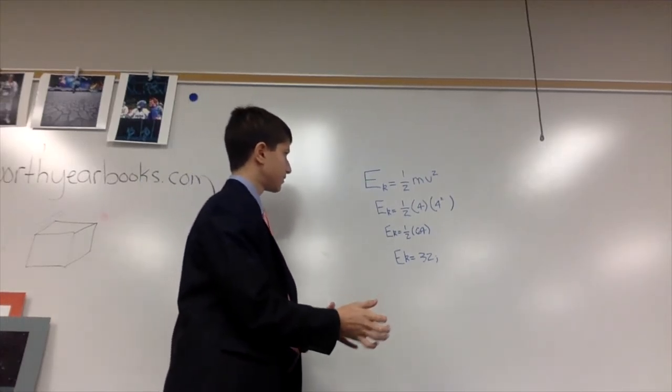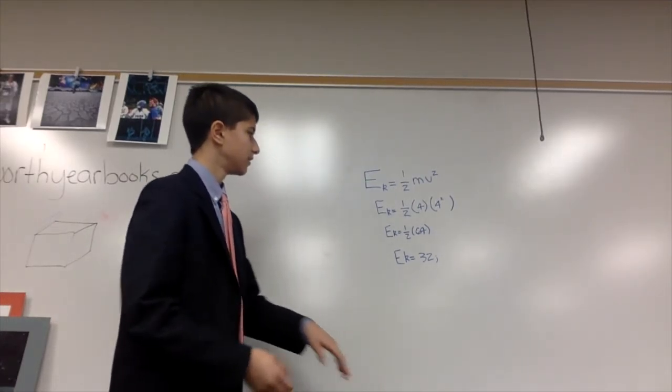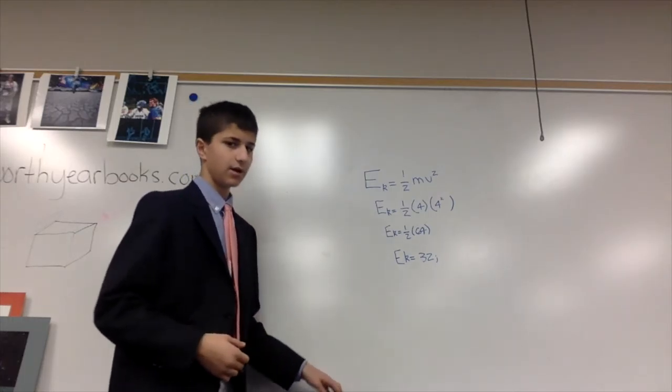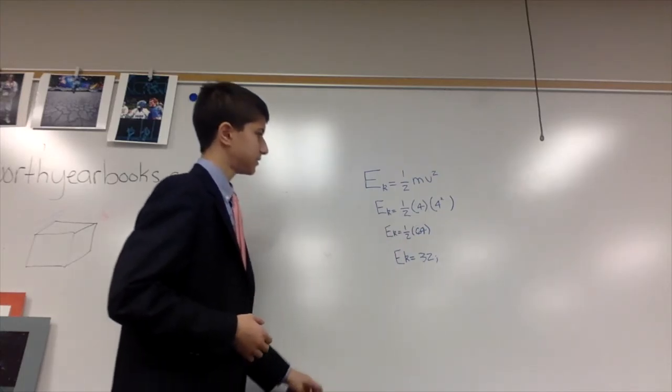The formula for kinetic energy is one-half times mass times velocity squared. So if the mass is 4 kilograms, and the velocity is 4 meters per second, you square the velocity, which would equal 16.